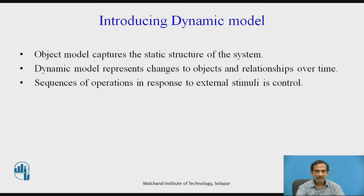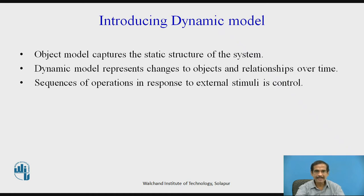A dynamic model consists of objects which model and capture the static structure of a particular system through the object model which is defined. This object model is used to represent particular objects. But the dynamic model represents the changes to objects and relations over time. It is the sequence of operations in response to an external stimuli, which is control.